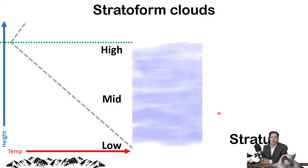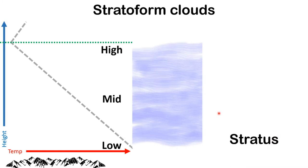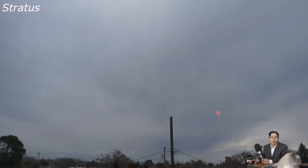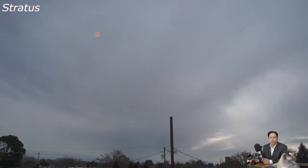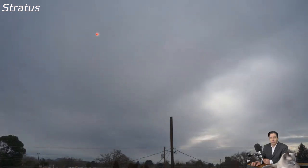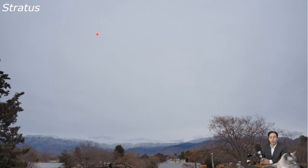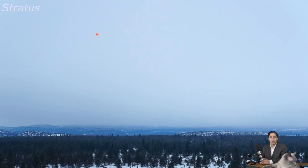Now we're going to move on to the stratiform clouds, which are much more boring to look at. Let's start with stratus. Stratus are the thickest of the stratiform clouds — so thick that we actually can't tell where the sun is. The cloud is too thick. Stratus clouds are pretty boring: just a solid gray sky, can't really see the edge of the cloud, can't tell where the sun is.